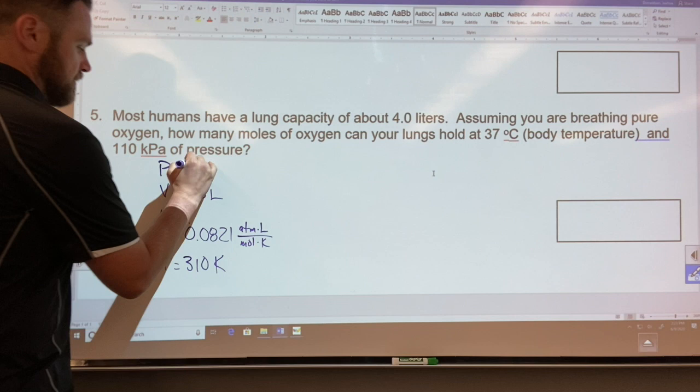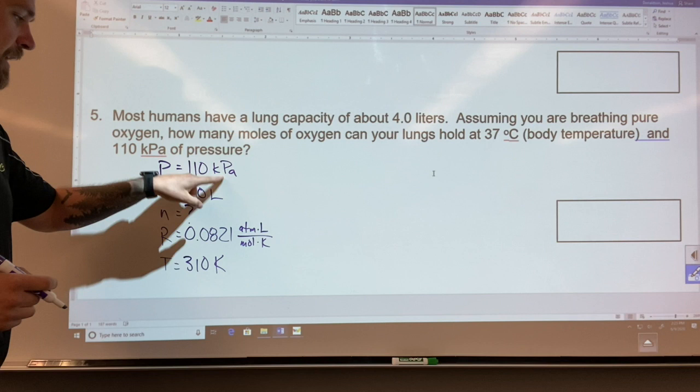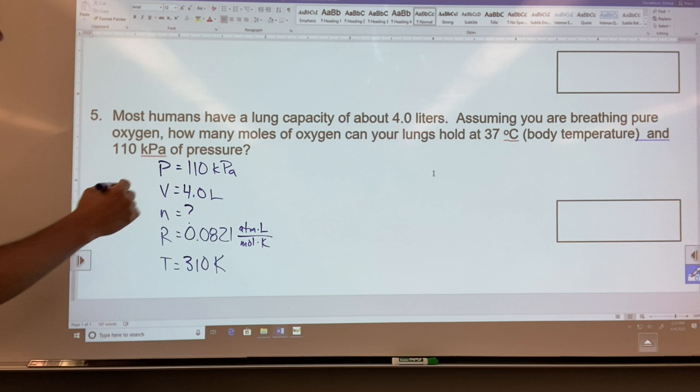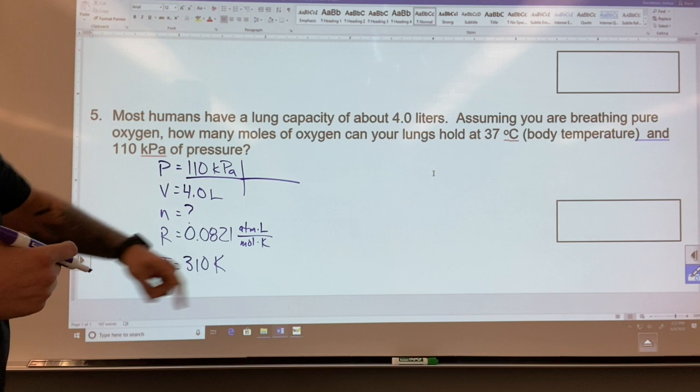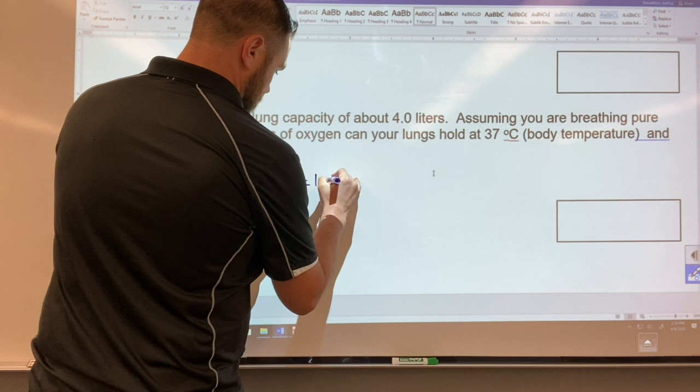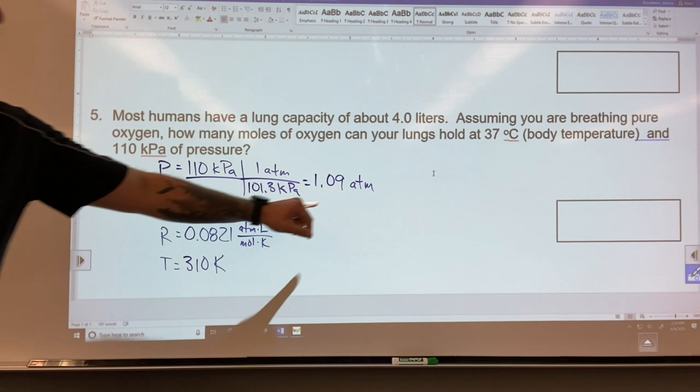Now you'll notice that this is kPa and this is atmospheres. I don't want kPa, I need to get rid of it, so I'm gonna have to do some converting. If this was in milliliters I'd have to convert this. Anything I would have to convert to make sure it's in the right unit. So I'm gonna go ahead and convert this. I know the relationship between kPa and atmospheres is there are 101.3 kilopascals for every one atmosphere. So 1.09 atms.